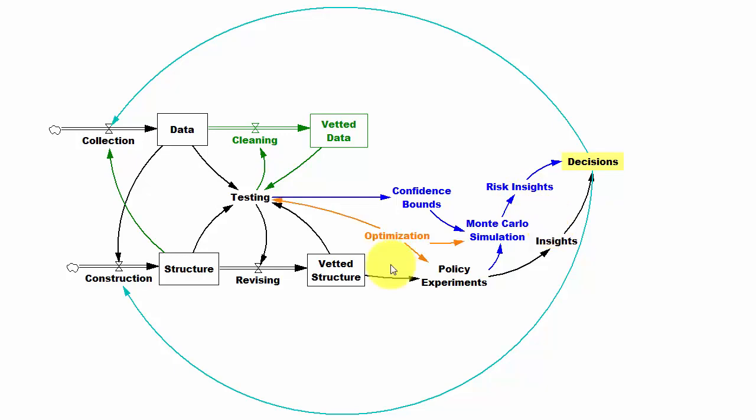Optimization also plays an important role. You can use it both to improve your policies and in stochastic optimization to improve your policies under uncertainty. After all, we're trying to make good decisions. And it also has an important contribution to testing because the optimizer will ruthlessly exploit any weaknesses in your model structure and reveal problems in model data correspondence.